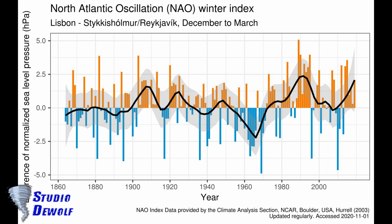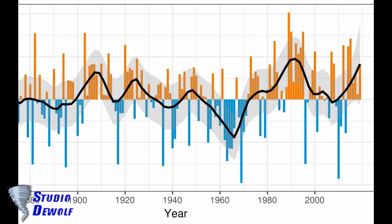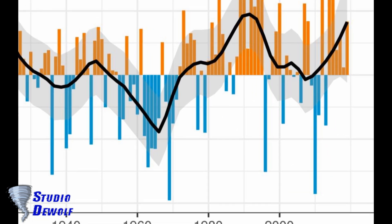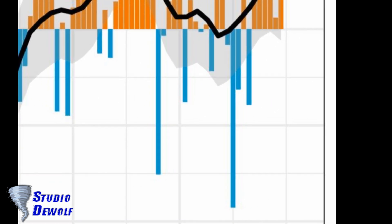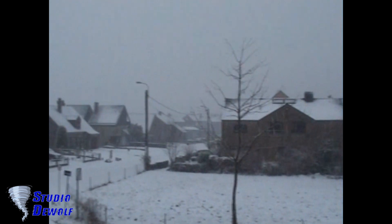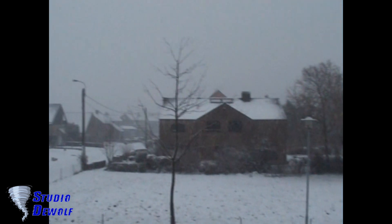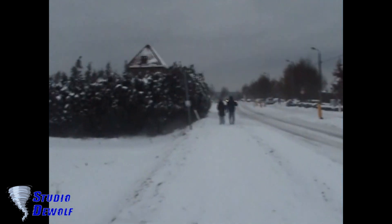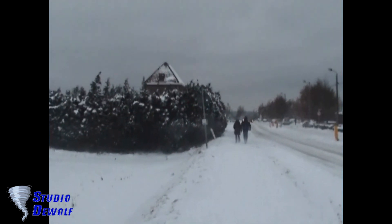So, when the NAO is negative, there is a greater chance of a snowier winter. A good example is December 2010. There were 23 snow days in Belgium — a record.